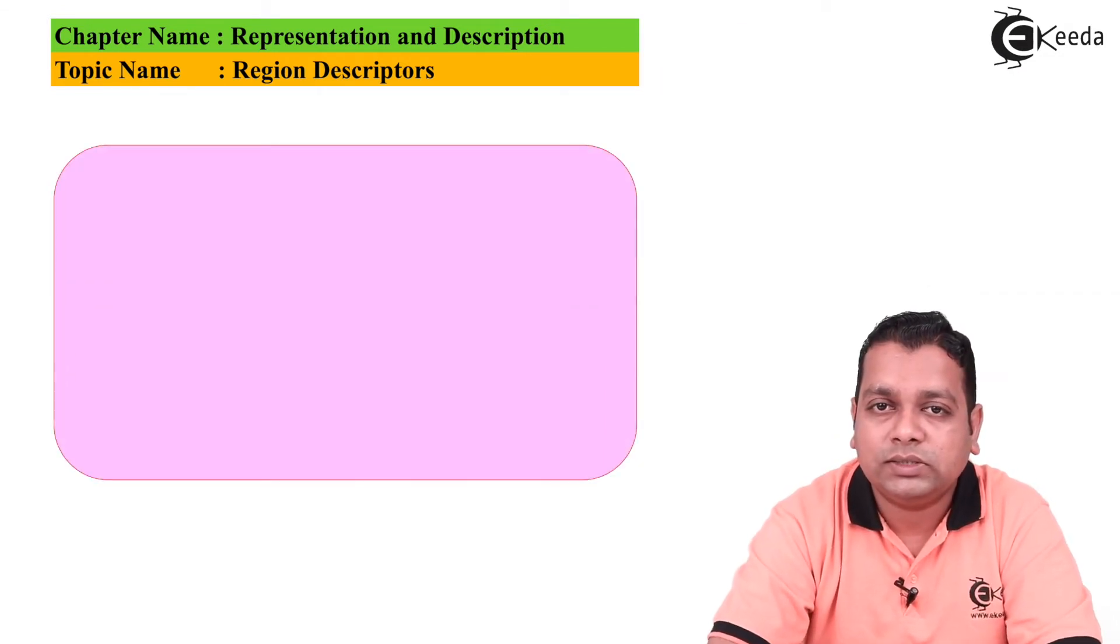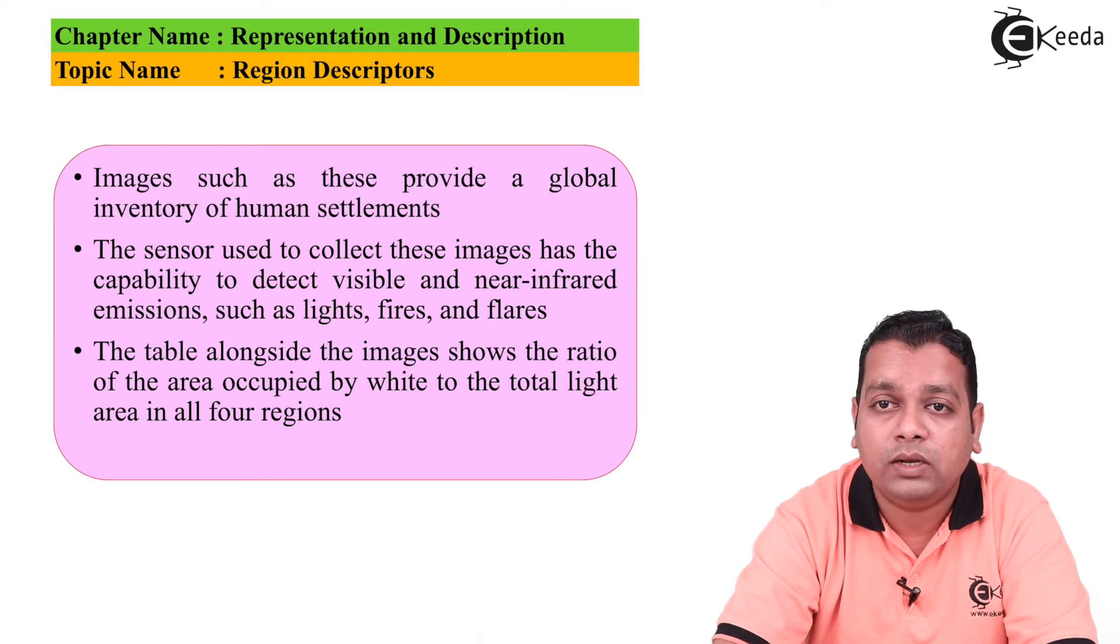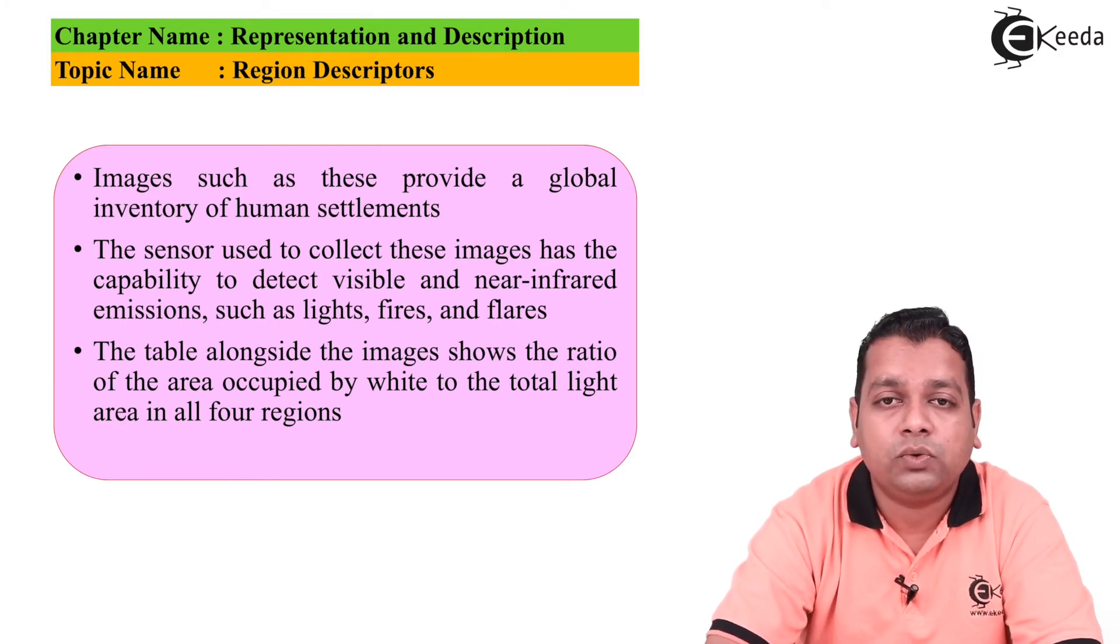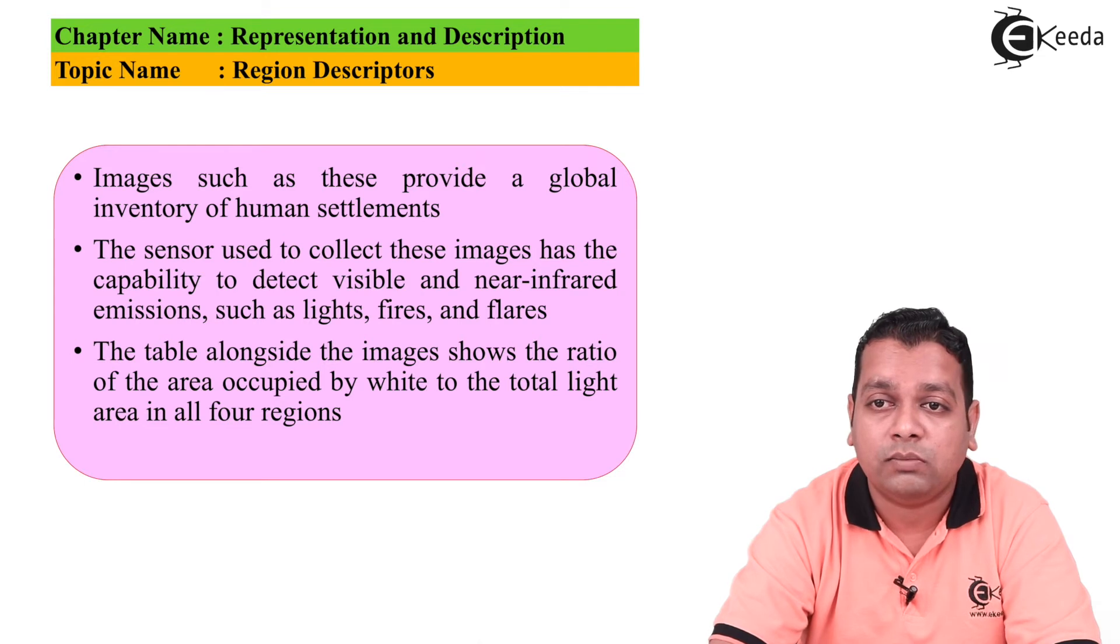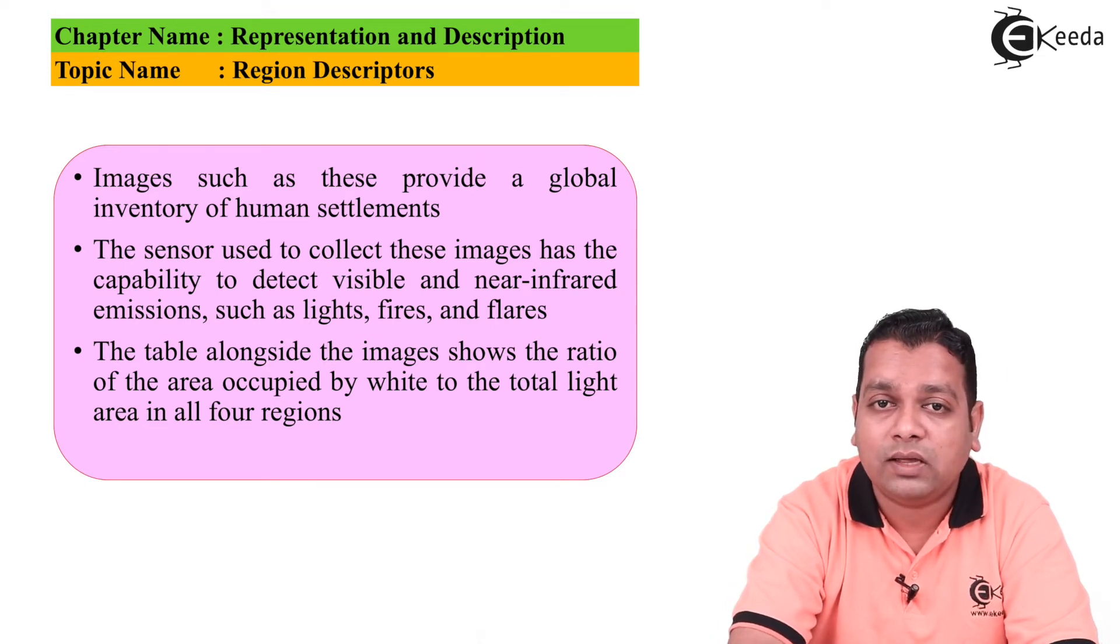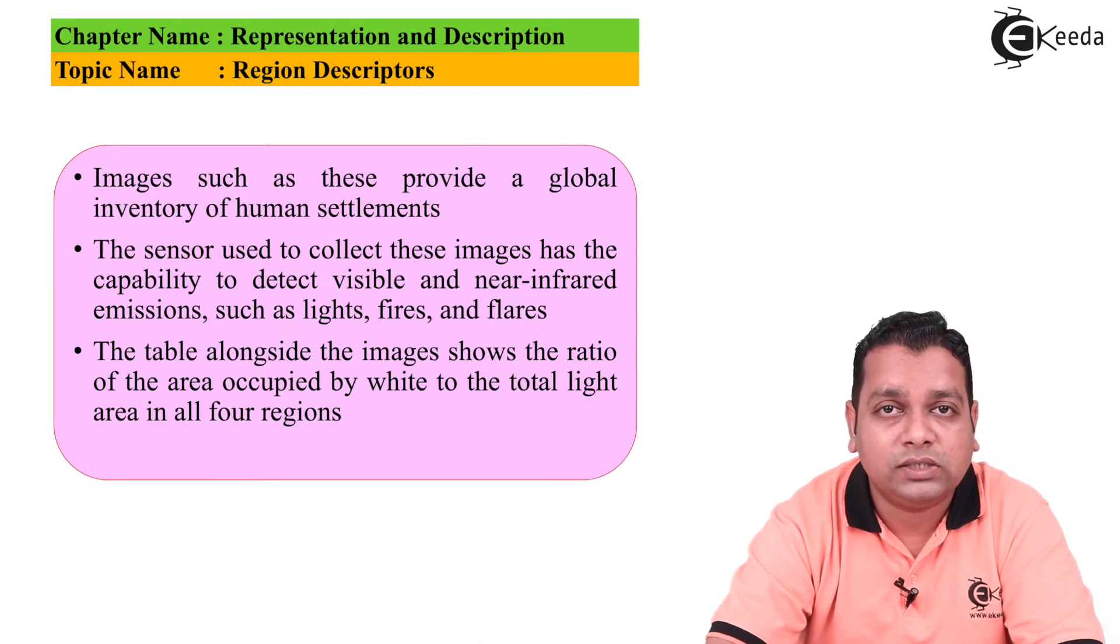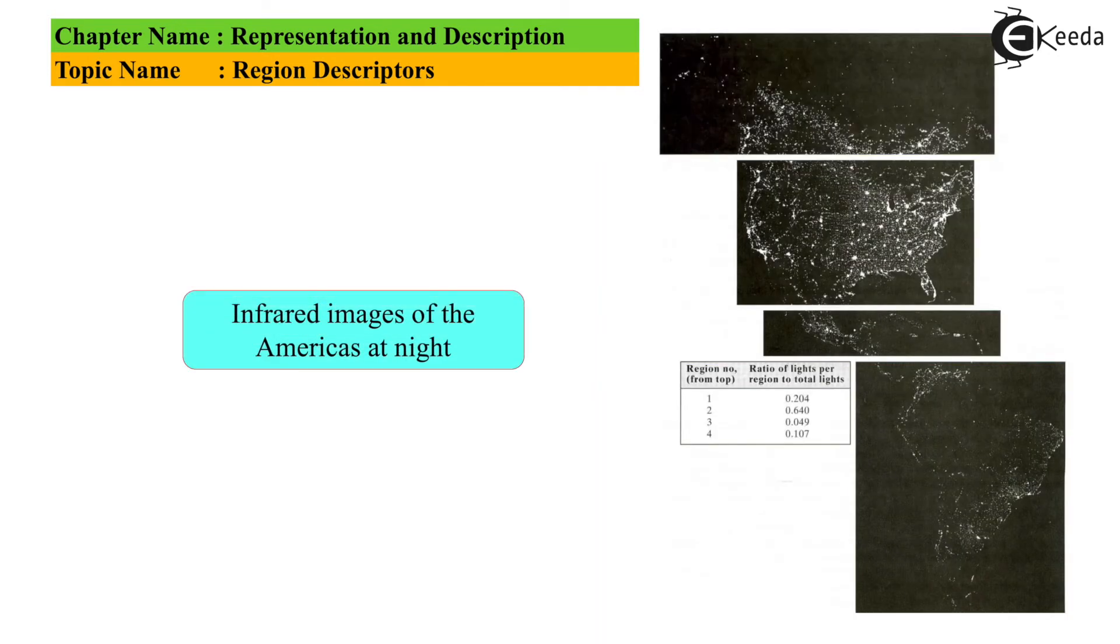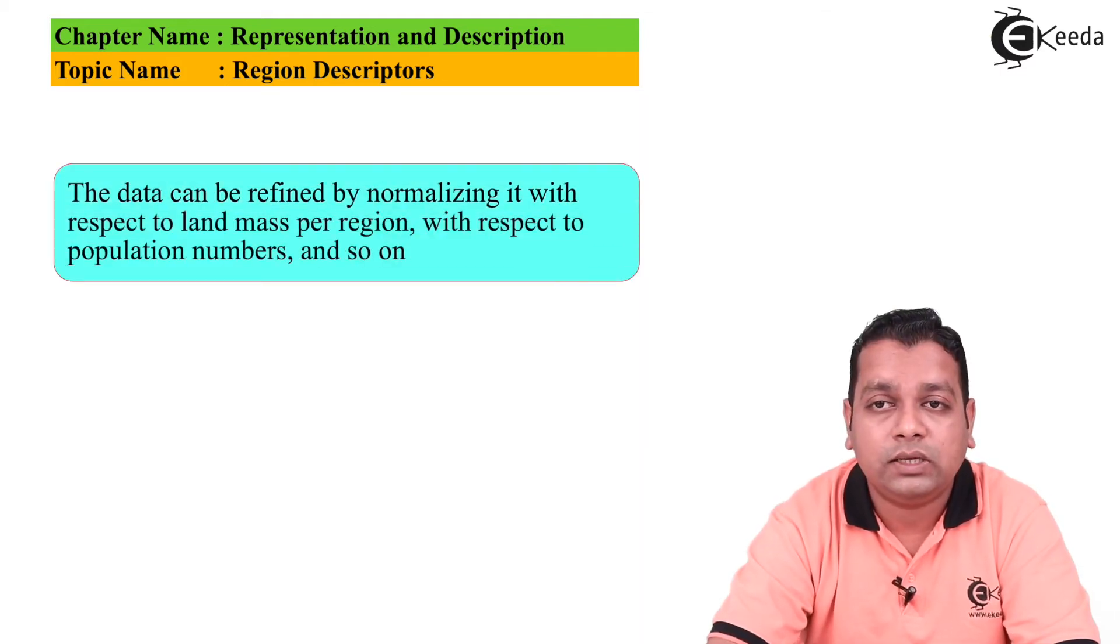Images such as these provide a global inventory of human settlements. The sensor used to collect these images has the capability to detect visible as well as near infrared emissions such as lights, fires, and flares. The table alongside the images shows the ratio of area occupied by white to total light area in all four regions. The data can be refined by normalizing it with respect to land mass per region, population numbers, and so on.